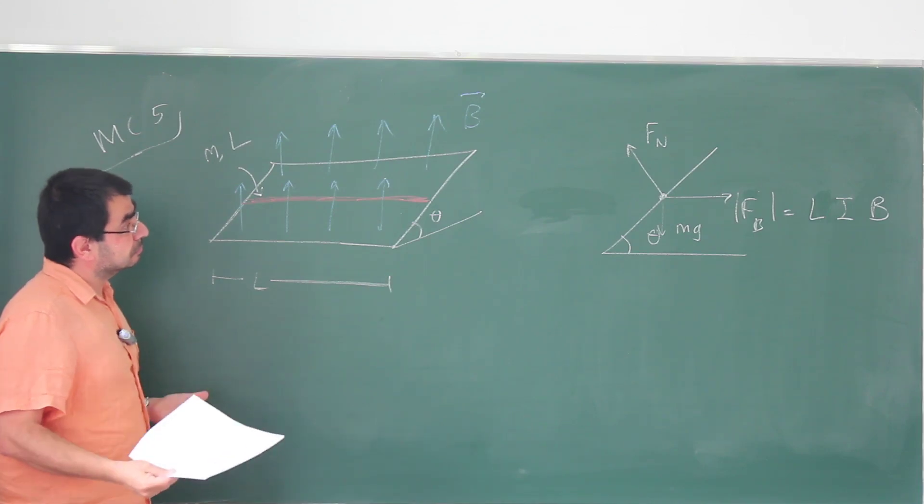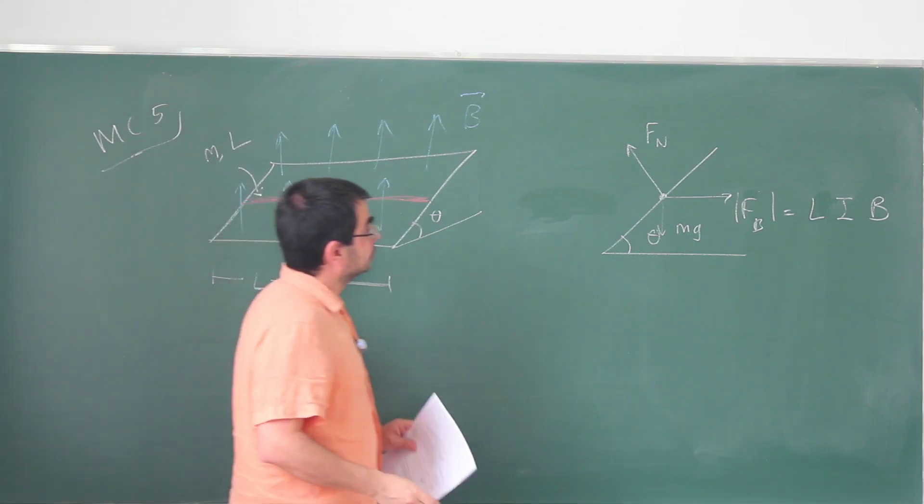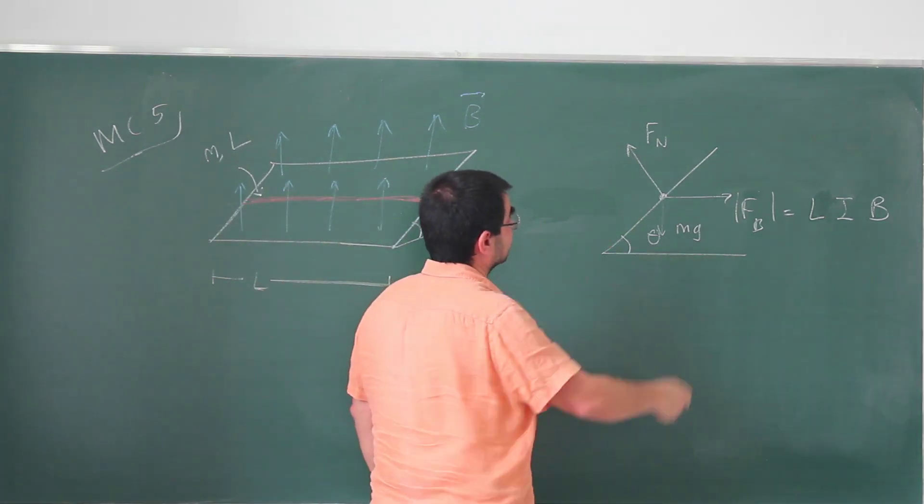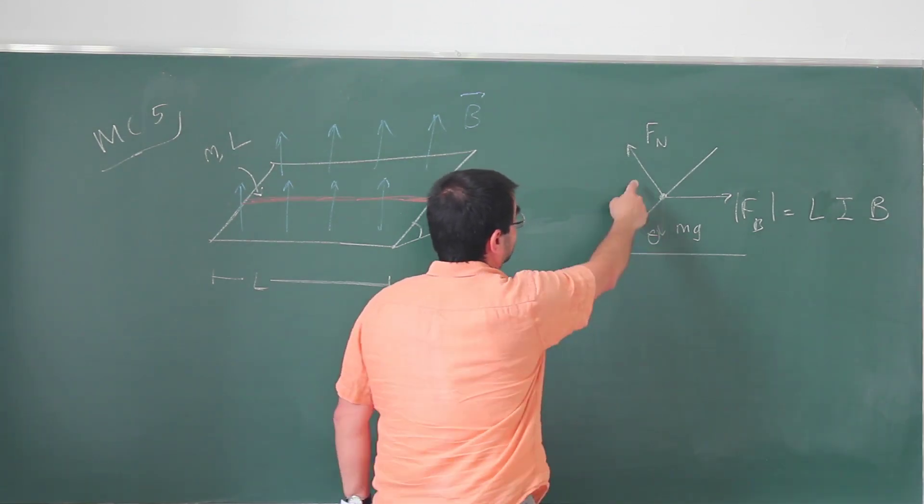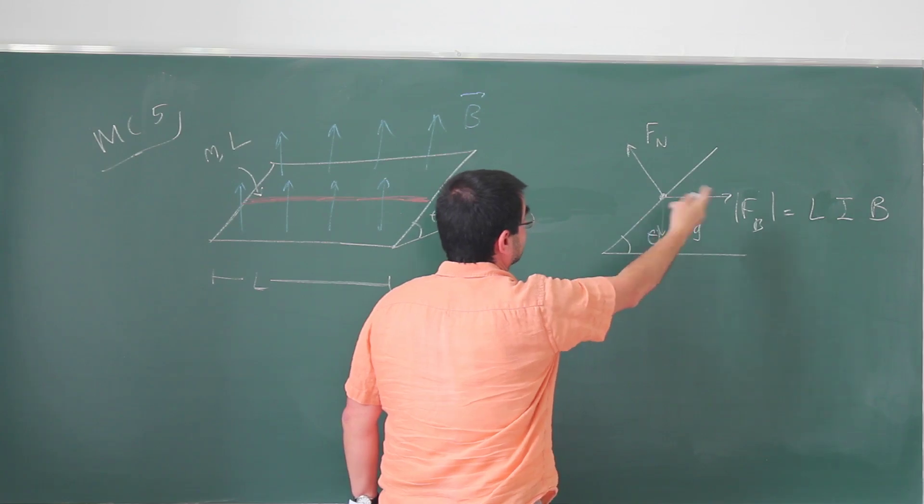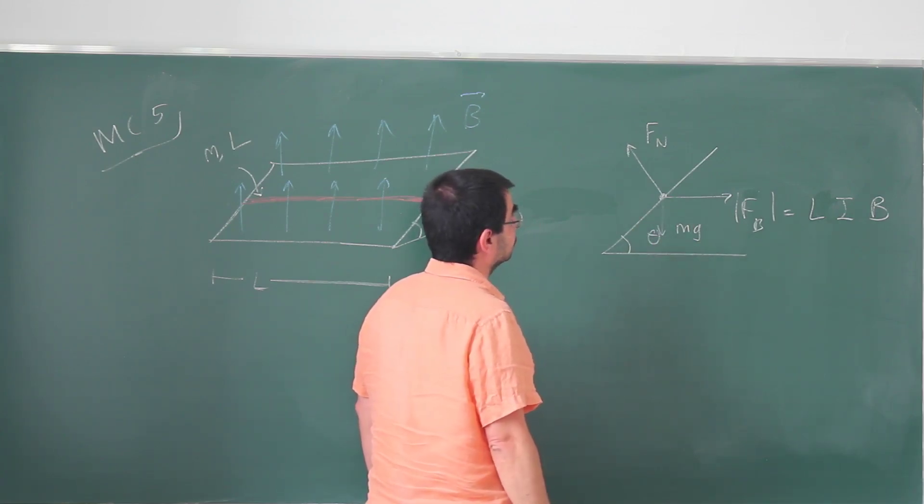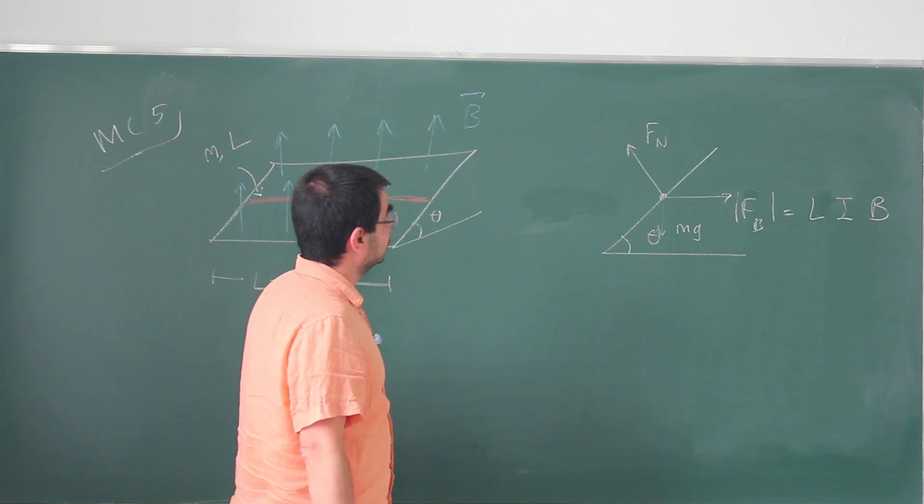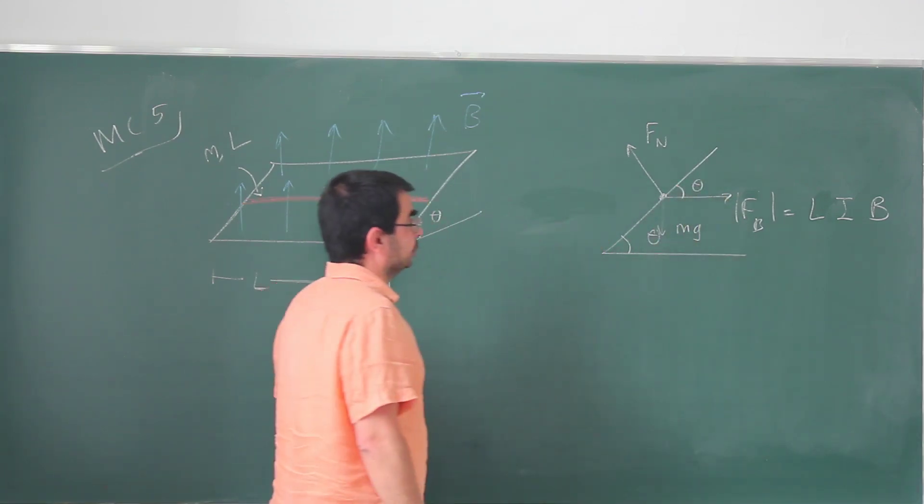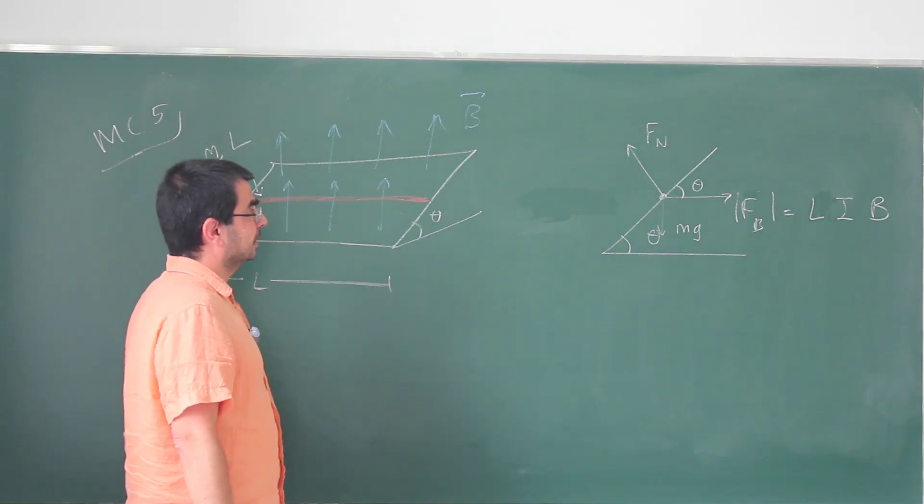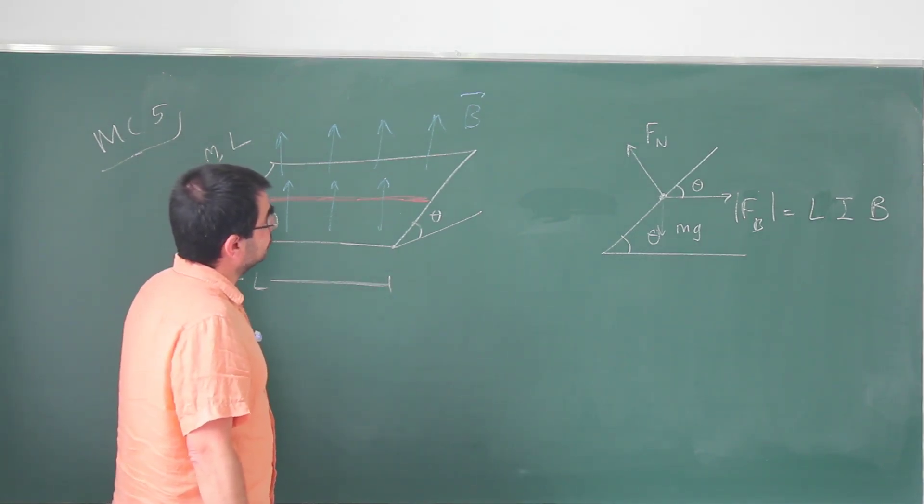So the way to do this is, of course, to make all these forces cancel each other. And the way to do that is to calculate the normal force in terms of Mg and then calculate the magnetic force in terms of the normal force. And we're going to figure out what the magnetic field should be from the magnitude of the magnetic force.